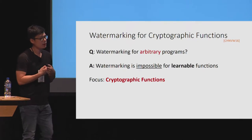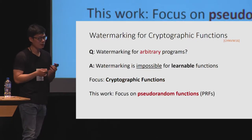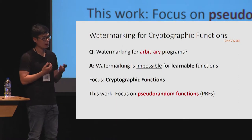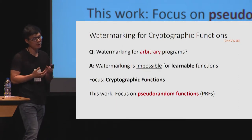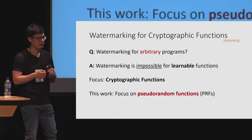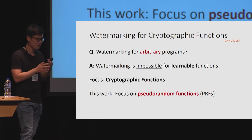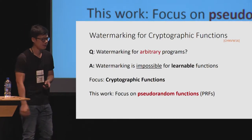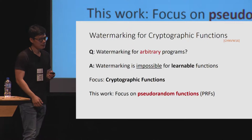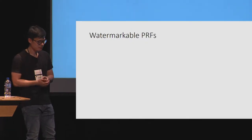Due to this impossibility, a lot of the research effort in this area has focused on constructing a watermarking scheme for programs that implement cryptographic functions, because cryptographic functions represent a large class of unlearnable functions. In this talk, we'll focus on constructing a watermarking scheme for cryptographic functions, and specifically for pseudorandom functions.